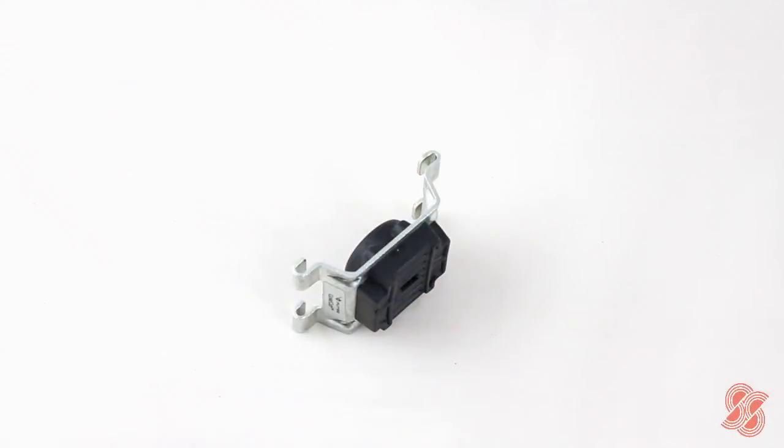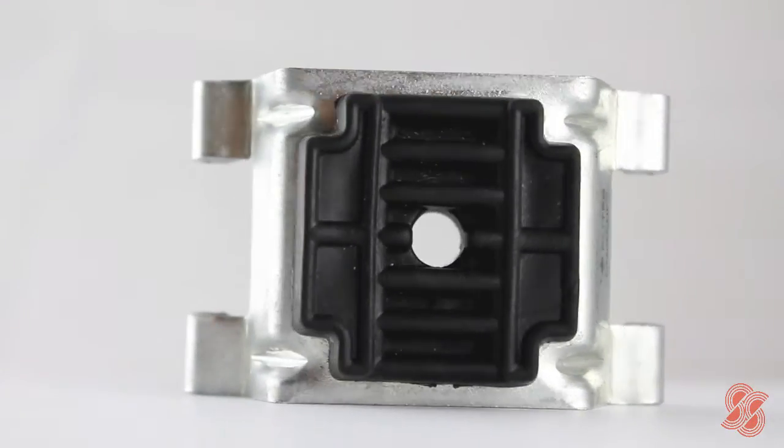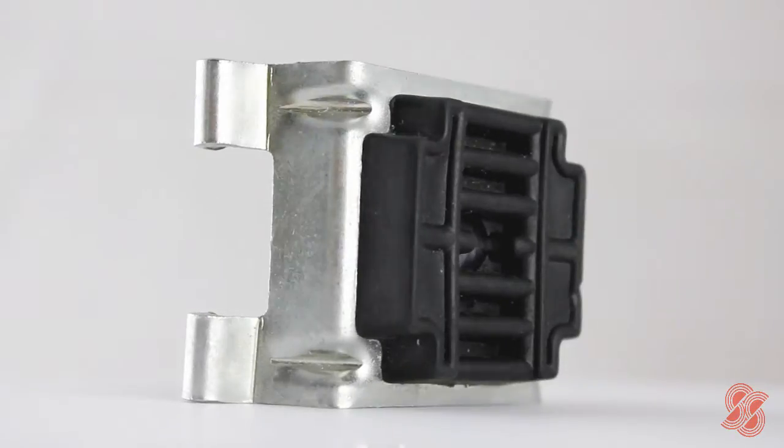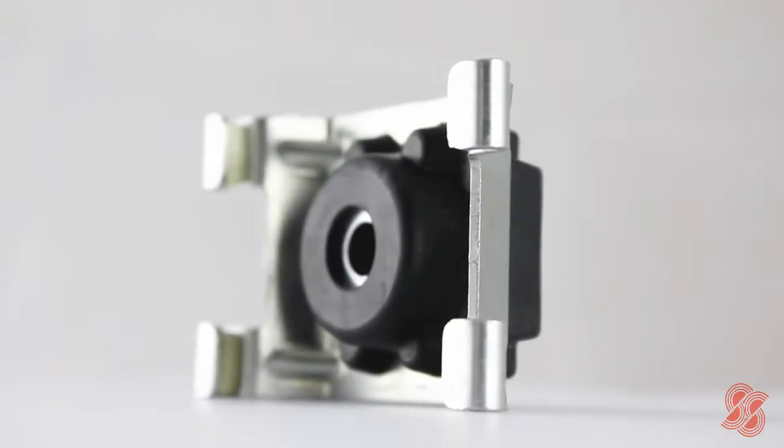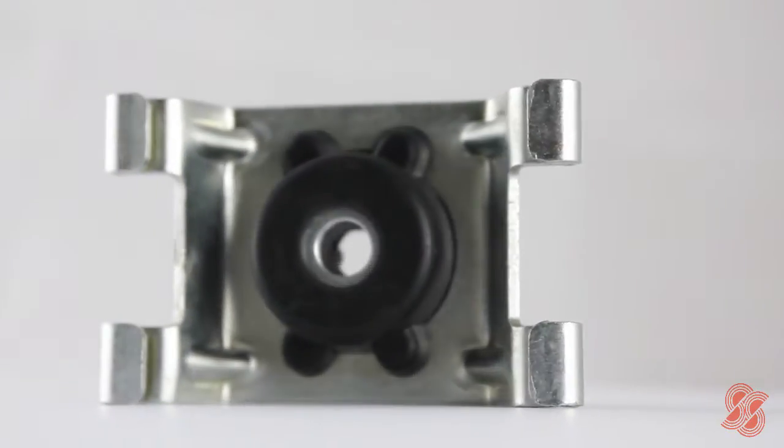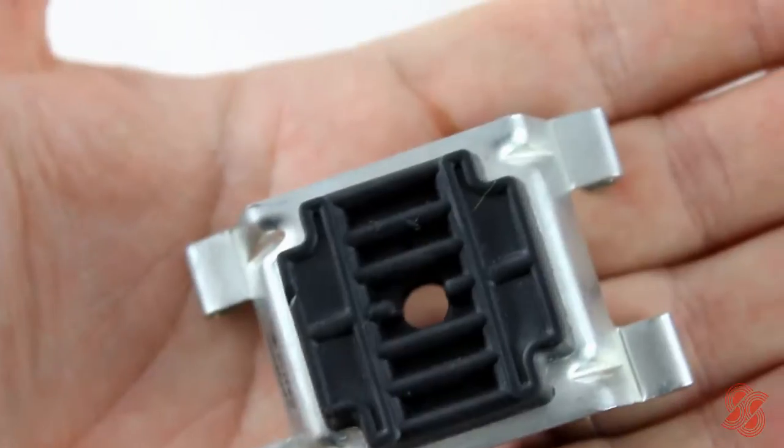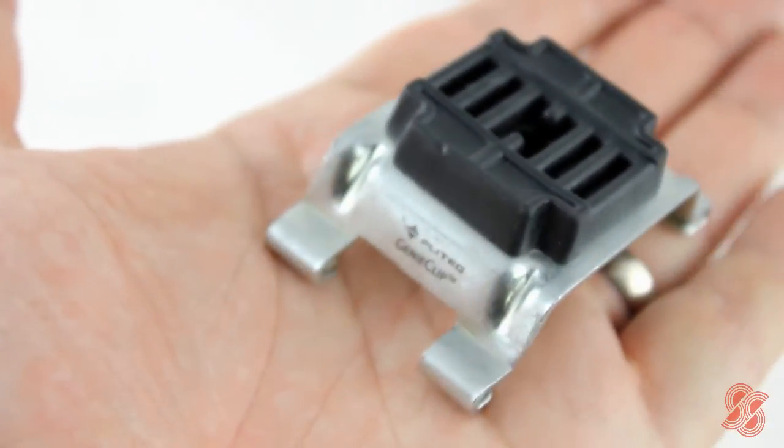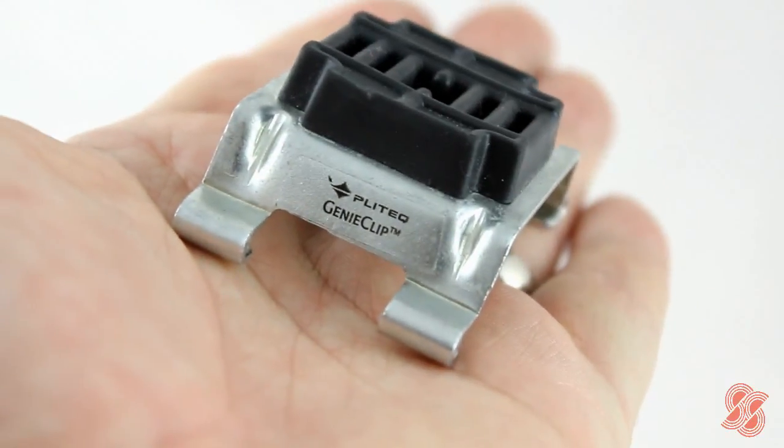The Genie Clip is a vibration absorbing resilient steel clip used on timber studs for walls and ceiling joists. The clip provides a revolutionary alternative to normal resilient bars in that, unlike resilient bars, Genie Clip is impossible to install incorrectly. The clip allows the new wall or ceiling to be decoupled from the vibrating surface, which will reduce both vibration and impact noise penetration.